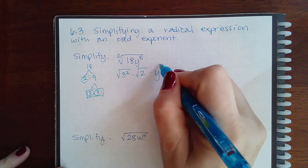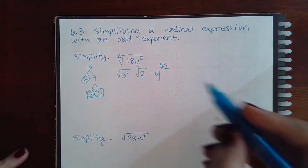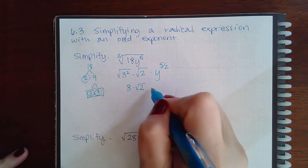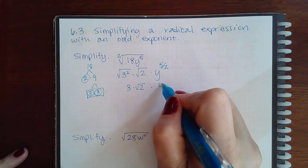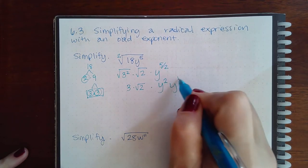For the variables, we do 5 over 2. So then we simplify this, which is just 3. Square root of 2 stays square root of 2. And then 2 goes into 5 two times, but with 1 left over.